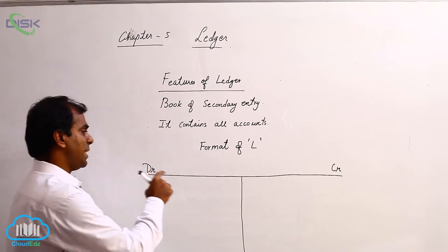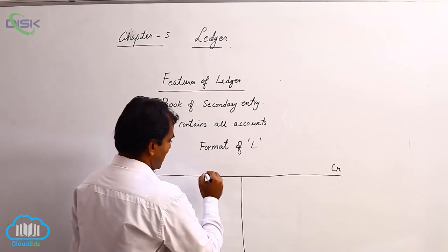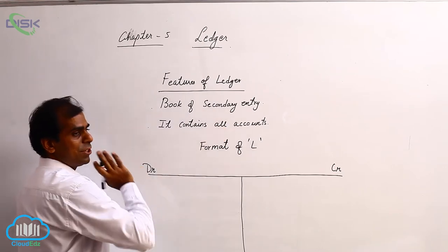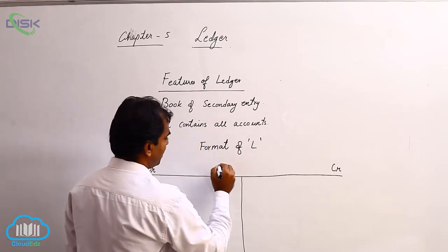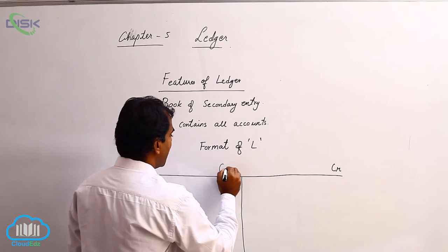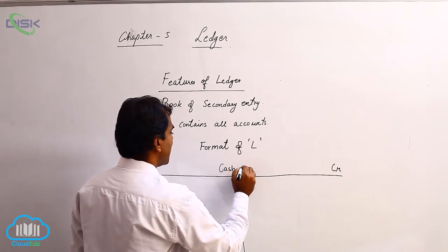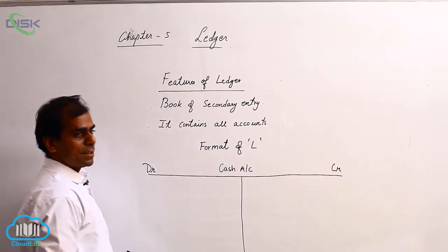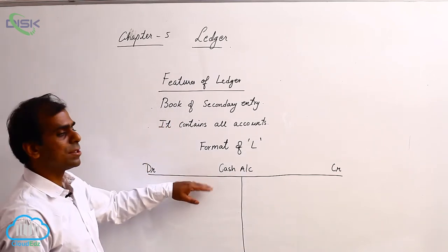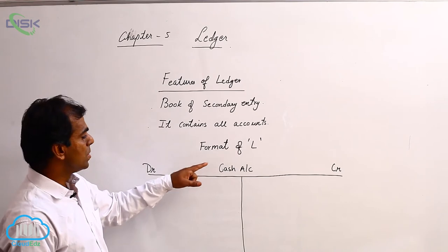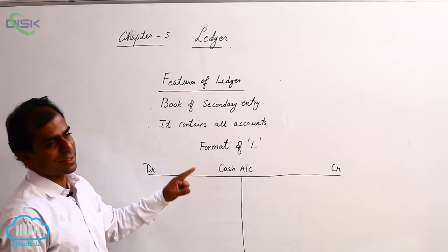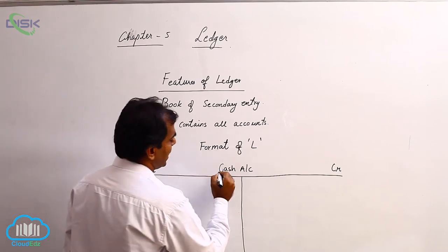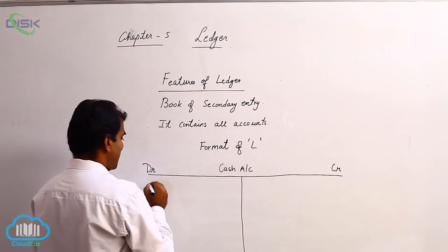The left hand side we call it as debit and the right hand side we call it as credit. In the middle we write the name of the account which we have written in the journal. For example, I am writing here as cash account. If your first journal entry had cash and capital, you create two ledgers — one for cash and one for capital, and so on. The heading has to be written in the middle.